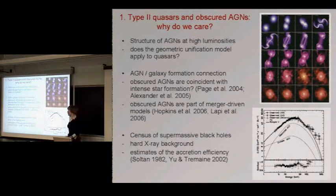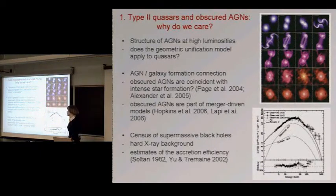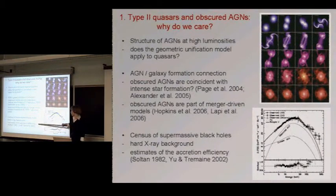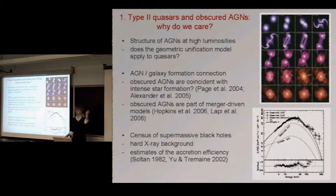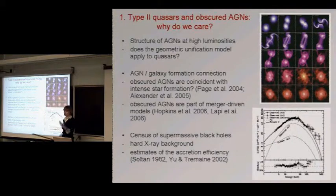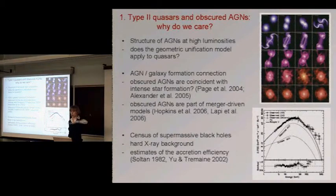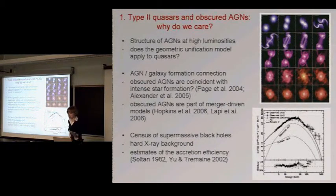Obscured AGN are part of merger-driven models of joint AGN-galaxy formation. Others are interested in the census of supermassive black holes — trying to understand what goes into the hard X-ray background, and also how to estimate the accretion efficiency of the black hole. You observe light from quasars, and you know that in the local universe there are relic black holes, so the two are connected via the efficiency of accretion. You can count up all the light of the quasars and all the mass in the relic black holes and find the accretion efficiency. Obscured AGN do make a contribution to this calculation.